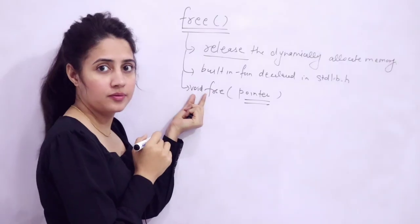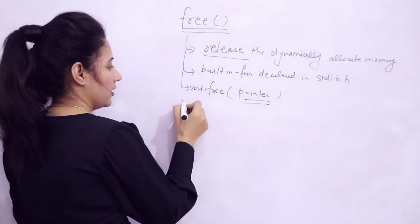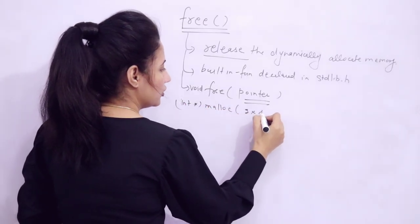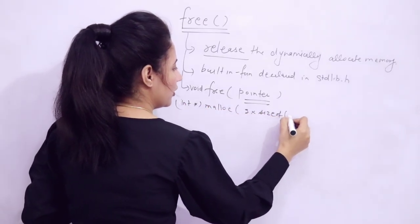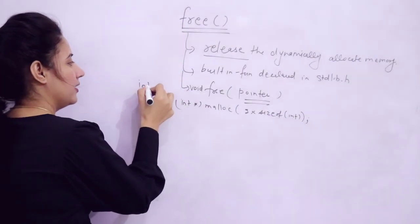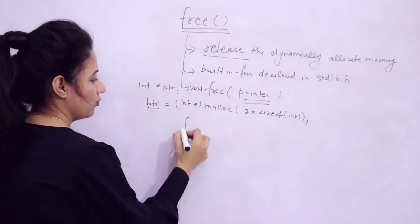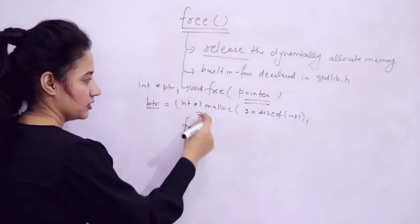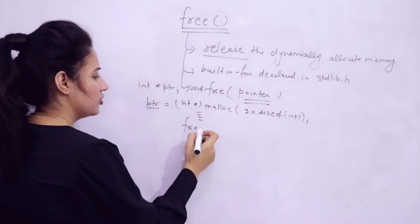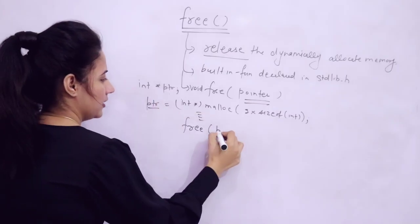The return type of free is void — it does not return anything. For example, if I allocated memory for two integers using int *ptr = malloc(2 * sizeof(int)), and after doing some computation, I want to free the memory, I just call free(ptr). That's it.